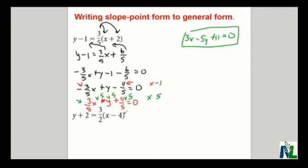If you wish, there's another example here, and you can pause the clip and attempt this one on your own. First thing I'll do is distribute the three halves or the slope throughout the bracket. That will give us y plus 2 is equal to 3 over 2x subtract 6.